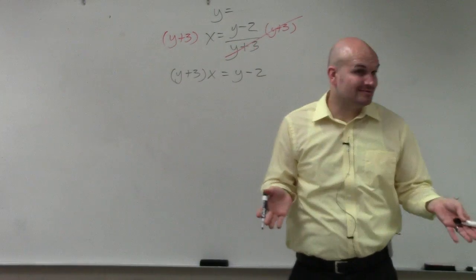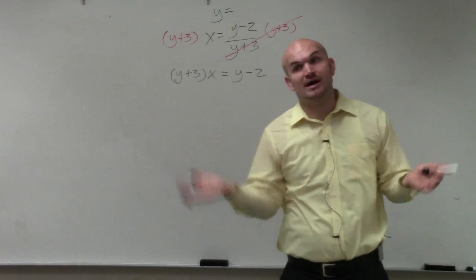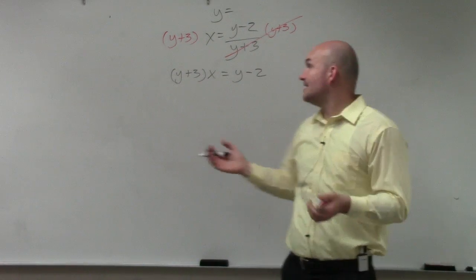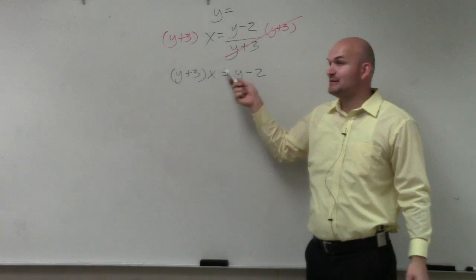So now I have y plus 3 times x equals y minus 2. Now, again, we're trying to solve for y. Can you solve for y when there's a y on the left side and y on the right side? No, right? All right, and plus this y is being multiplied by the x.